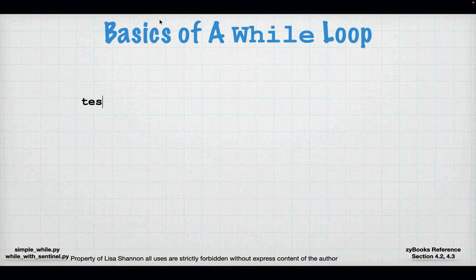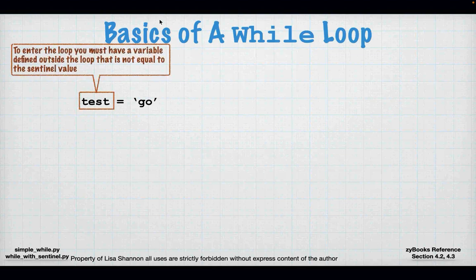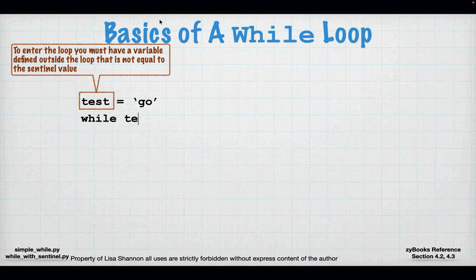The first thing we're going to talk about is a while loop. While is our keyword. I'm going to define a variable before the loop because I have to check the variable value against the sentinel value. Before that keyword while appears, I need to define a variable that's going to allow me to go inside the loop — it's going to force the first iteration to evaluate to true.